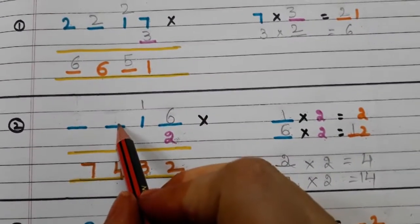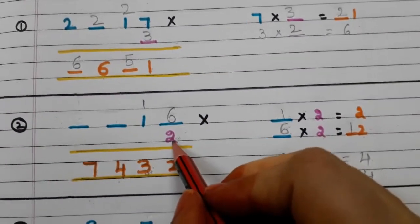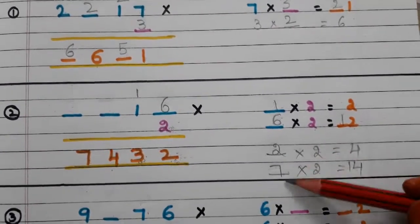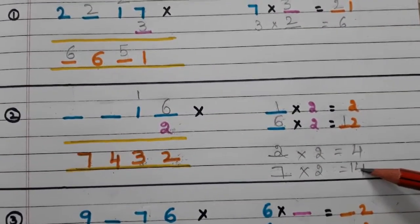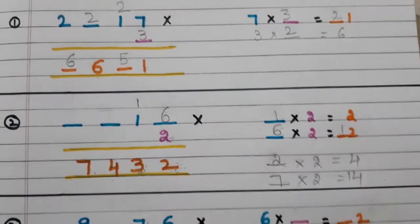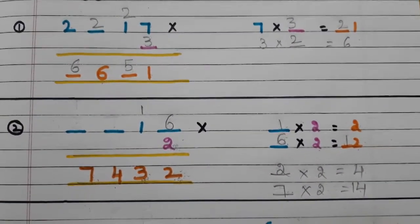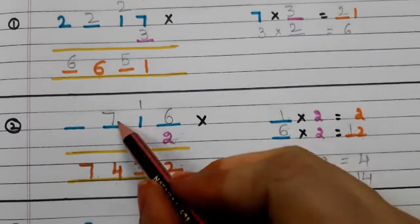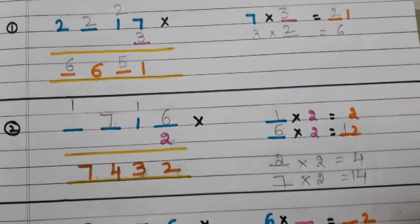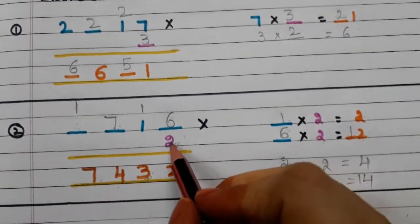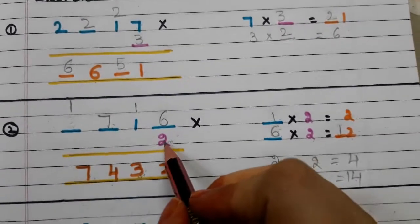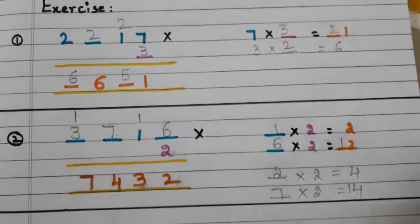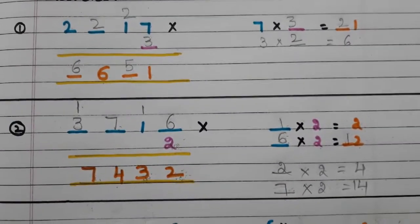Now let us find the next digit. 2 is there and the result has 4. With what number do we multiply 2 to get 4 in the units place? Options are 2 twos are 4 or 7 twos are 14. Since 7 appears in the result above, we need a carry, so the digit is 7. 2 sevens are 14, carry 1. Now for the remaining digit: we have 2, and 2 threes are 6 plus 1 carry is 7. So this digit is 3.